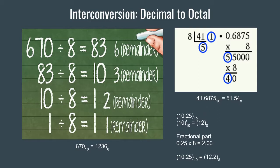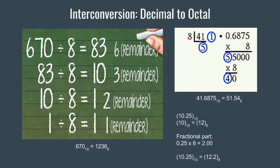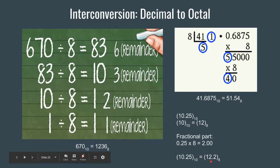Let us take a look at one more example. We have 10.25 in the decimal number system and want to convert it to octal. First we convert the integer part: dividing 10 by 8 gives 1 as quotient and 2 as remainder, so 10 decimal is equivalent to 12 in octal. Now for the fractional part, 0.25 multiplied by 8 gives 2.00 directly, so the process terminates. The octal equivalent of 0.25 is 2, and hence 10.25 decimal equals 12.2 octal.